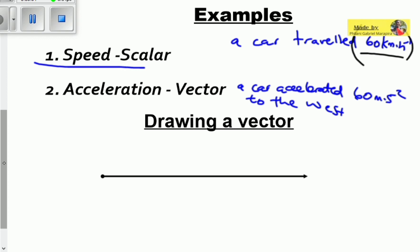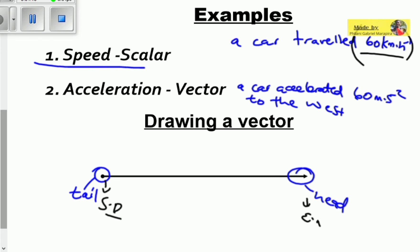Here's how you draw a vector — this is the structure of a vector. You represent it with an arrow. It's a simple structure: here you can find the tail, which is called the tail of the vector, and then this is called the head of the vector. The tail indicates the starting point of a vector, and the head is the end point of a vector. The head also shows the direction of a vector — it tells you where this vector is going.